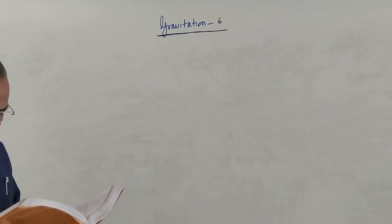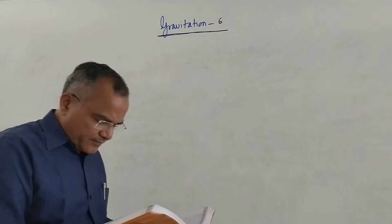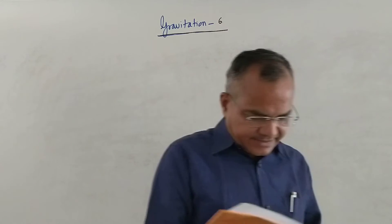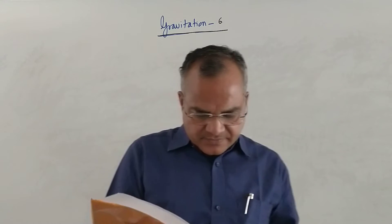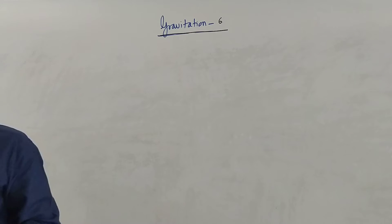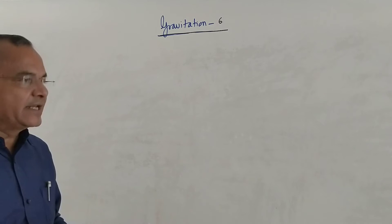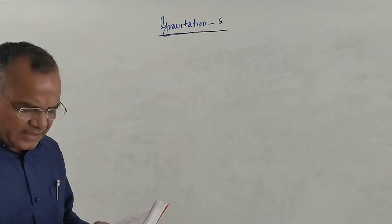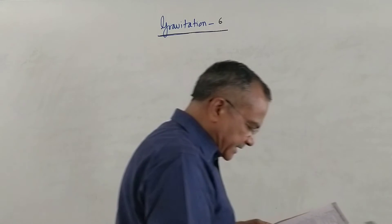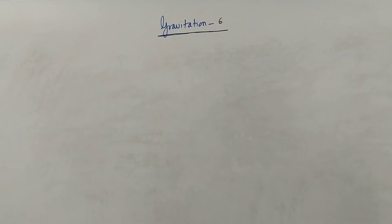For problem number 248, there seems to be a printing error. The question asks: which of the following quantities is not conserved in the motion of the satellite? Angular velocity, linear velocity, and weight are not conserved; what is conserved is linear momentum. So the answer relates to linear momentum conservation.